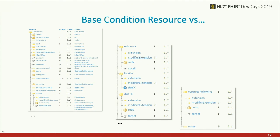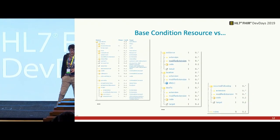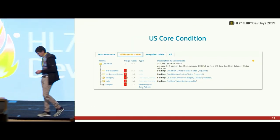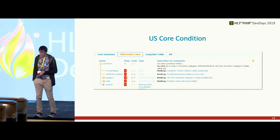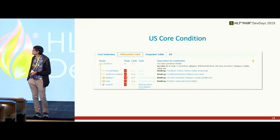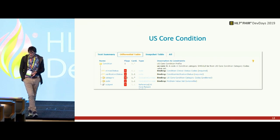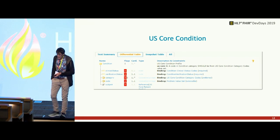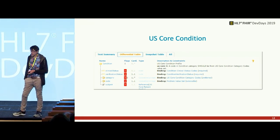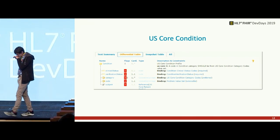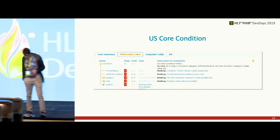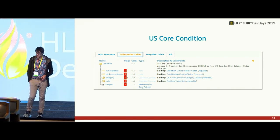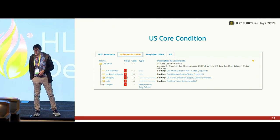You have base resources like the Condition resource. In the standard FHIR specification, there are a lot of elements with zero-to-one cardinality — a lot of optionality. That's on purpose for a base standard so you have flexibility to tighten constraints for your implementation. In US Core and Argonaut resources, we make a few adjustments and tighten things down. For US Core Condition, we've defined about five data elements that should be the minimum standard — the floor for interoperability — including status, category, code, and patient.